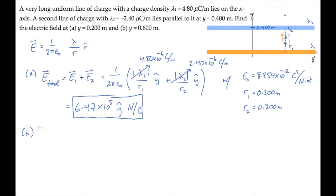In part b, we're asked to find the electric field up here, where y equals 0.6 meters. In this case, the electric field from the orange line is still directly away from it, and the electric field from the blue line is towards it. So one is now in the positive direction, and the other is in the negative y direction.